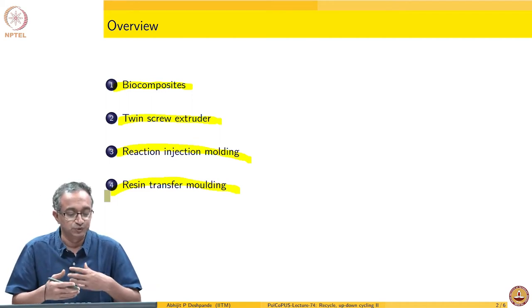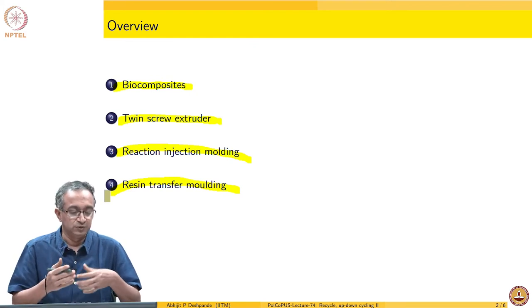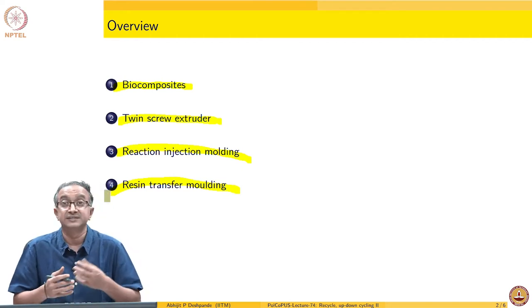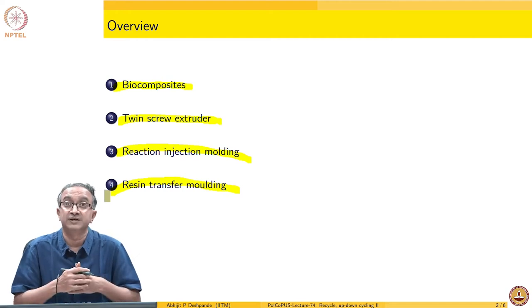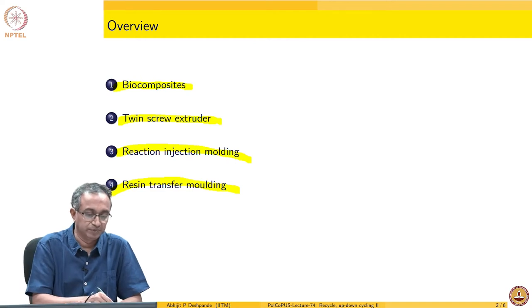Can we use twin screw extruder, which is an excellent device for mixing? Can we use the reaction injection molding, in which case we combine molding and reaction operations, and resin transfer molding, which can give us quite complex shape, including the reinforcement, can this be done effectively for biocomposites.